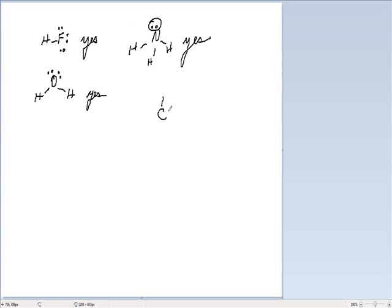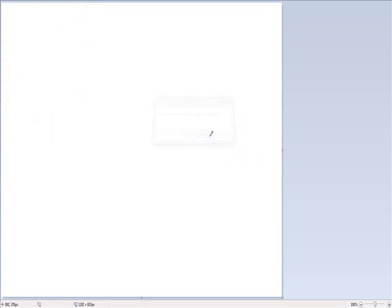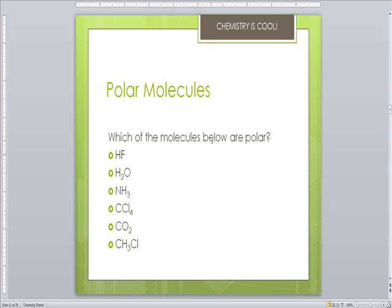And then finally, carbon tetrachloride. So we did the VSEPR for that. We know that it's a tetrahedral molecule. All of the terminal atoms are the same, so the answer is no, it's not polar. Okay, so you're going to go back and do the other section, the last two on the examples. So you're going to do carbon dioxide and methyl chloride.